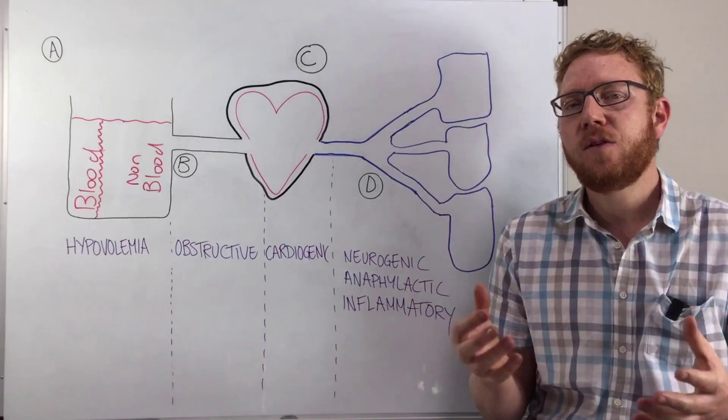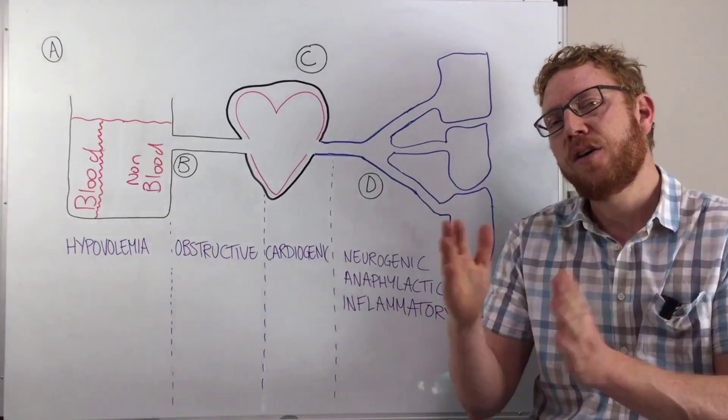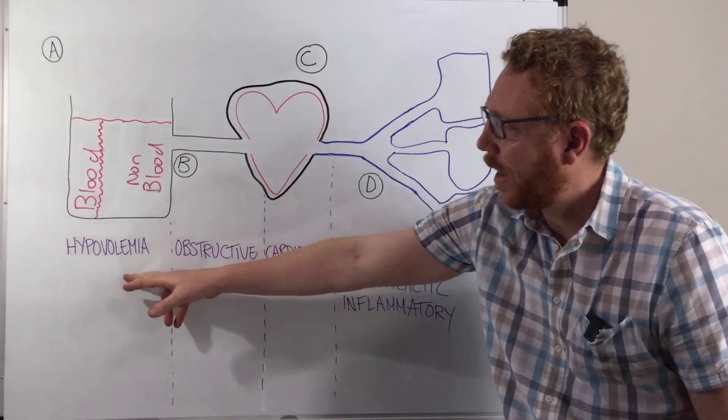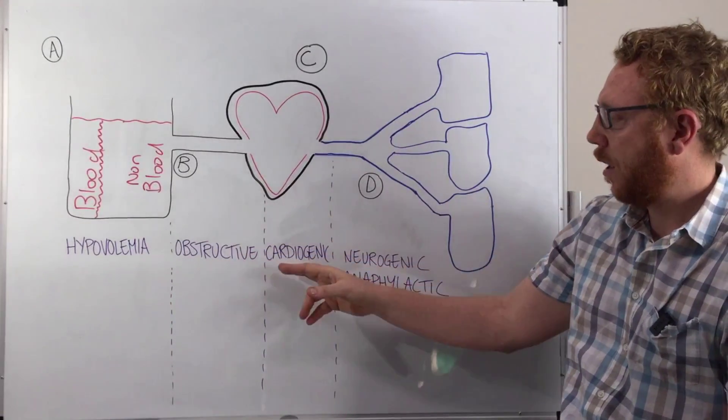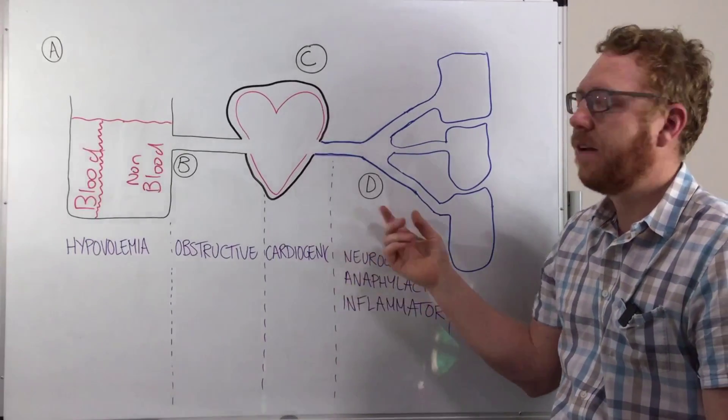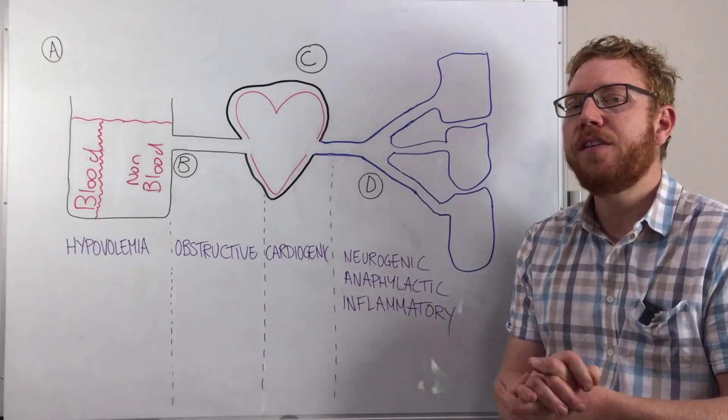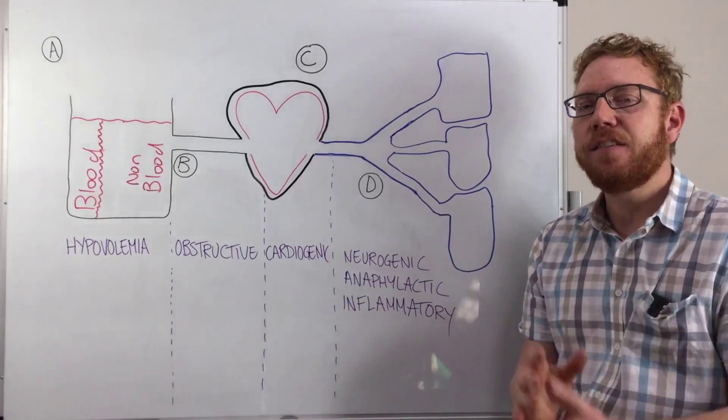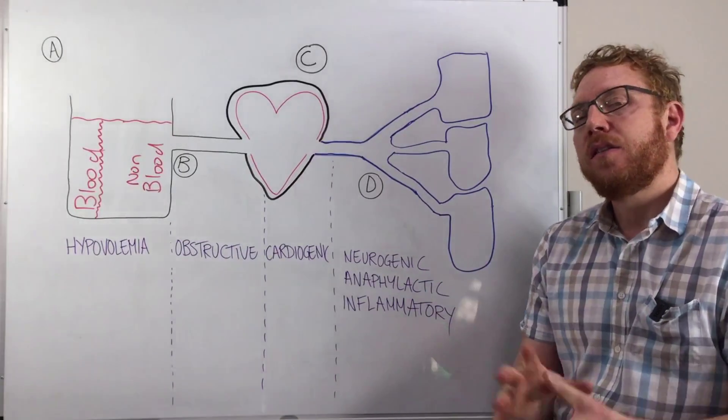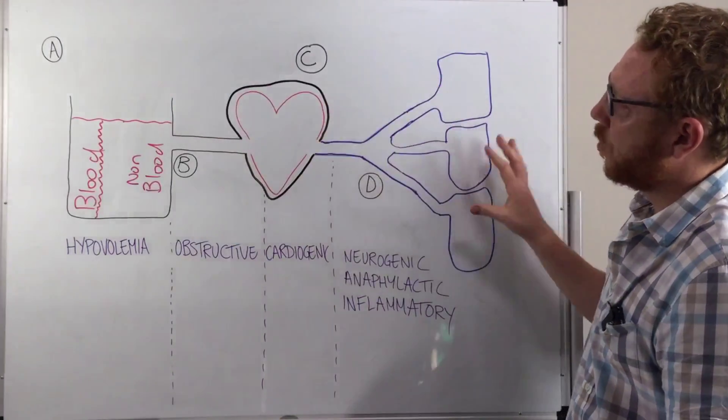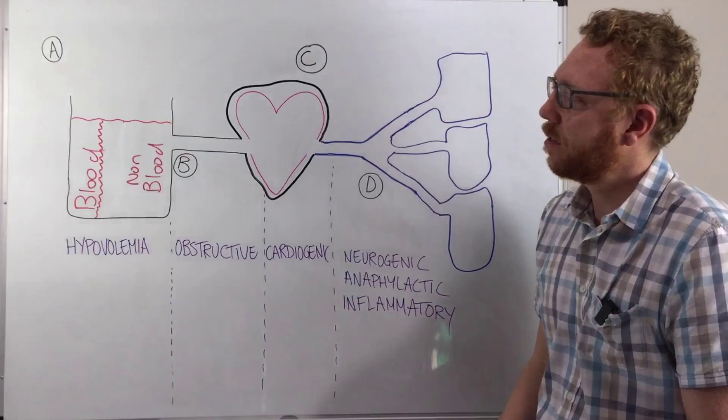Now, traditionally, the way we broke up shock or categorize shocks by causes are being through things like hypovolemic shock, obstructive shock, cardiogenic shock, and then finally distribution shock. But what I thought I would do here is hopefully a method to make it easier for you to remember these different causes and the mechanisms behind it. So let's go through this image quickly and that hopefully will make sense of it.